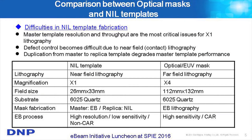There is a comparison between the nominal 4x reticle and the 1x master. The main difference is magnification — the template is 1x size compared with optical or EUV masks at 4x. The field size for nanoimprint is 26 by 33 mm, exactly the same as the optical scanner field. The substrate is the same 6-inch format, about 6 mm thick. For the master we use electron beam writing; for the replica we use imprint technology.